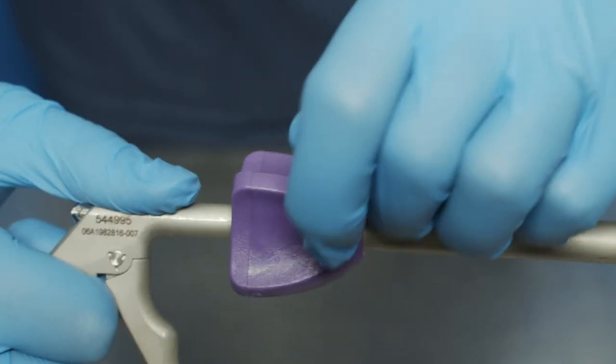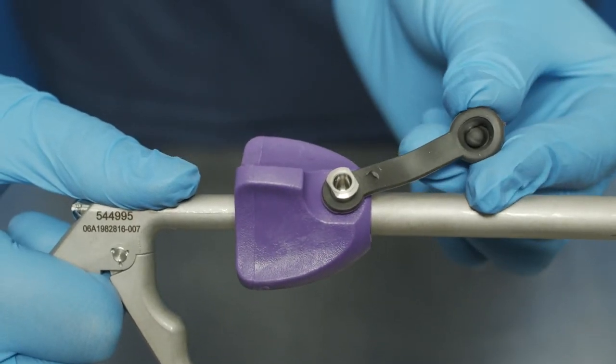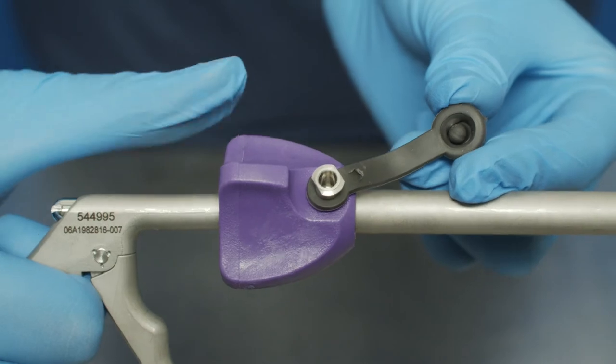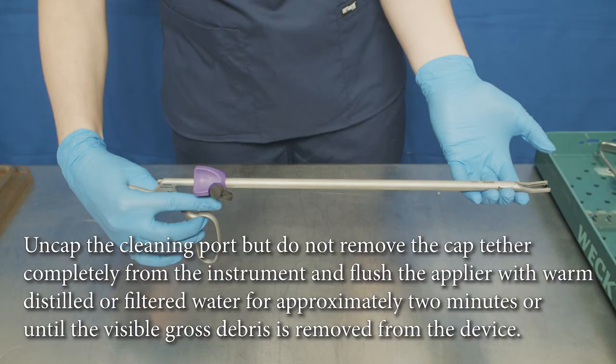Some of the endoscopic appliers are provided with a cleaning port, which permits access to the interior channels and cavities. Uncap the cleaning port, but do not remove the cap tether completely from the instrument and flush the applier with warm distilled or filtered water for approximately two minutes or until the visible gross debris is removed from the device.